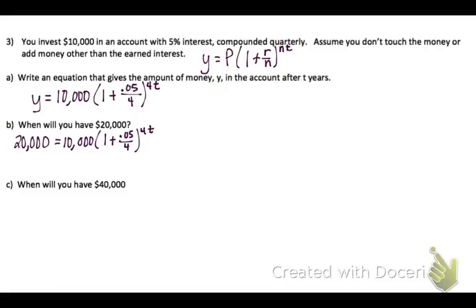The first thing I want to do when solving this kind of equation is I want to get rid of the $10,000. So I'm going to divide both sides by $10,000. I get 2 equals